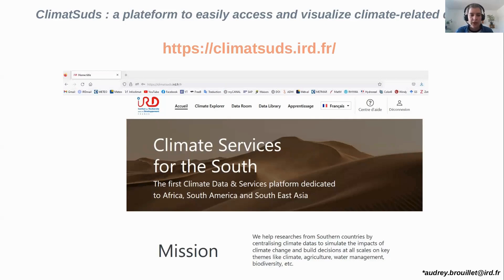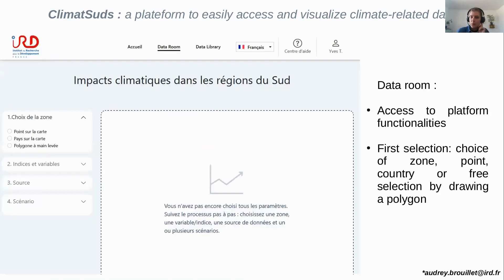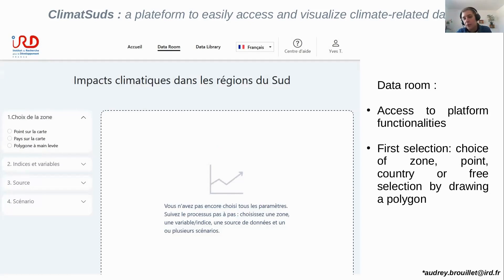This is how ClimateSUD looks. You have the link there, and I will provide it again later. You have to register to track how the data and website are used. For now, use is strictly limited to research and academic users — you cannot use this data commercially. Once connected, you go to the data room, where you can select a point on the map, a country, or draw a region or polygon.